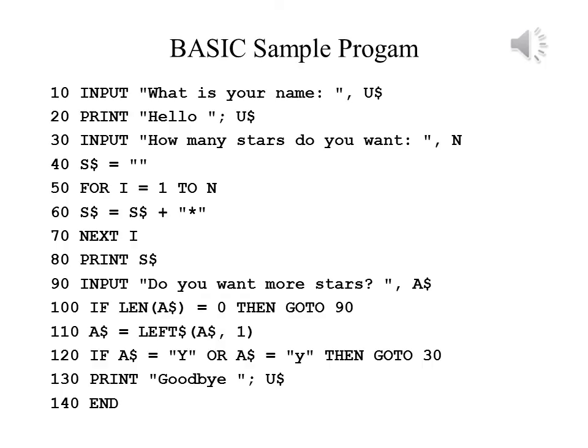BASIC programs back then were line-oriented, and the line numbers were sequential. If the line number for a statement was before the previous line's number, it meant that line was intended to appear before the lines with larger line numbers. Repeating a line number meant that you were replacing the line. The input statement printed a prompt to the user and allowed them to enter a value. In the original Dartmouth BASIC, variables could be only a letter or a letter followed by a digit. The dollar sign in line 10 means that the variable holds a character string, while its absence indicates that the value is numeric. The semicolon after the word in line 20 means the value appears immediately after the string; if a comma appeared, it meant the value was tabbed over after the string.